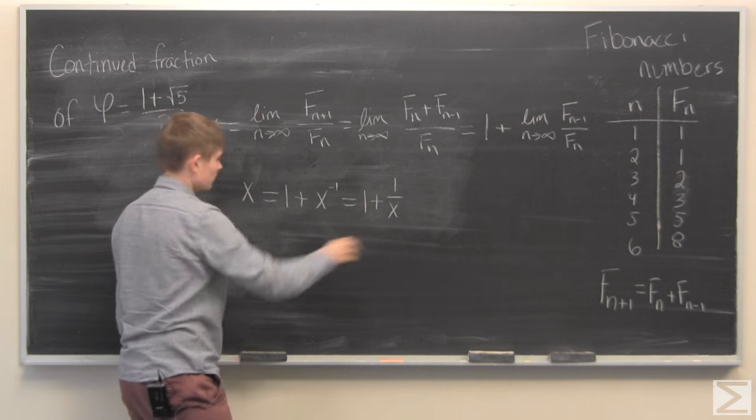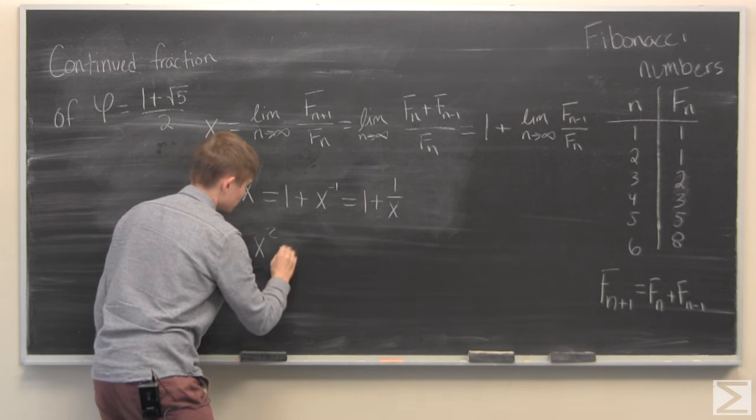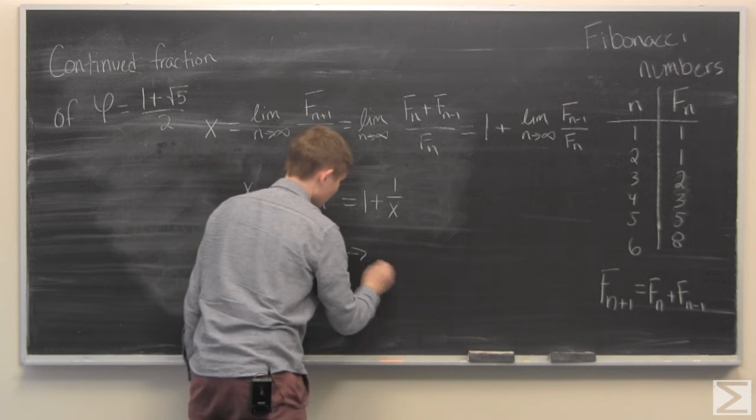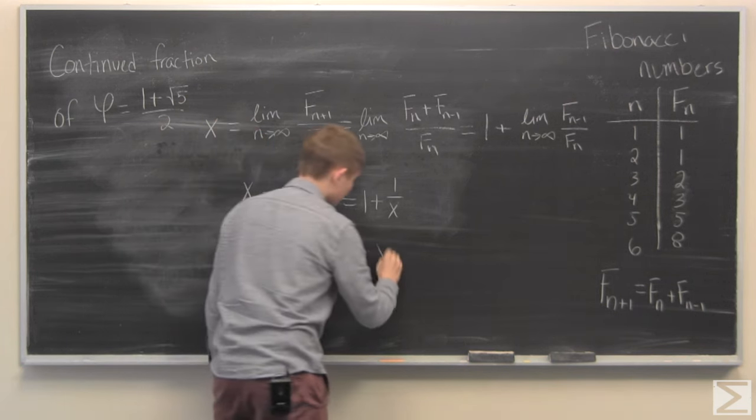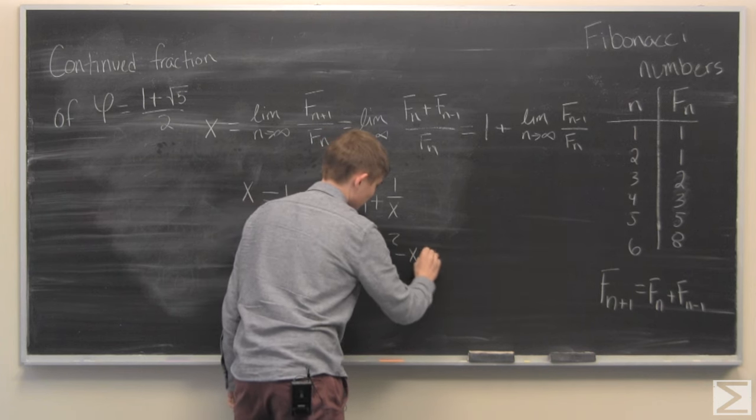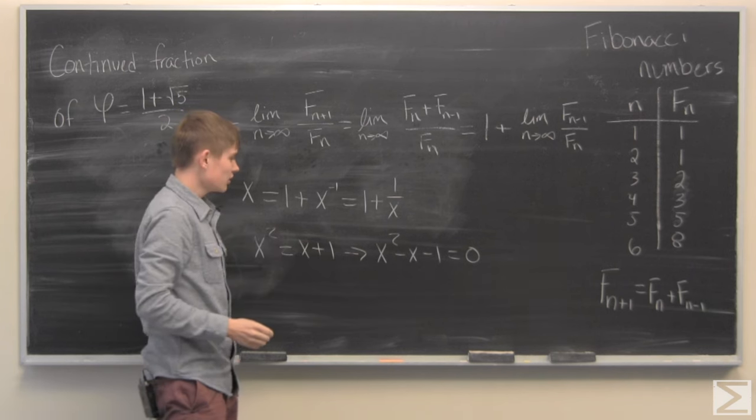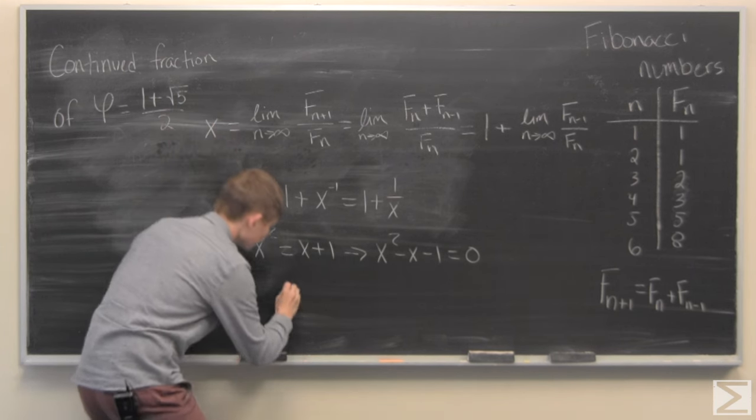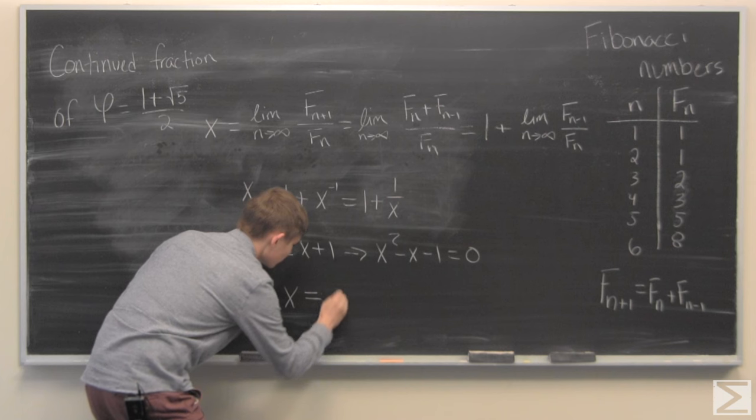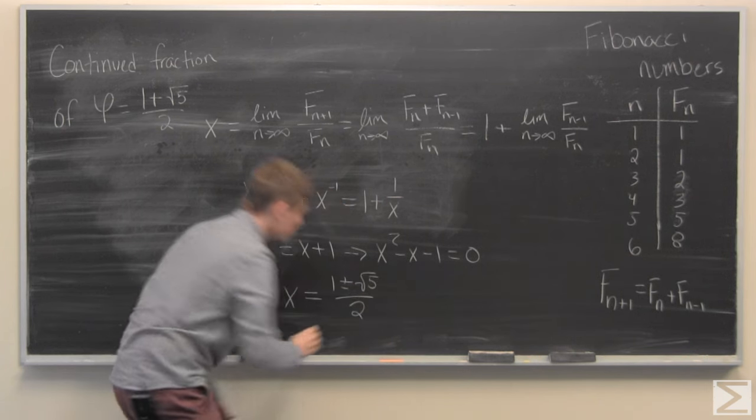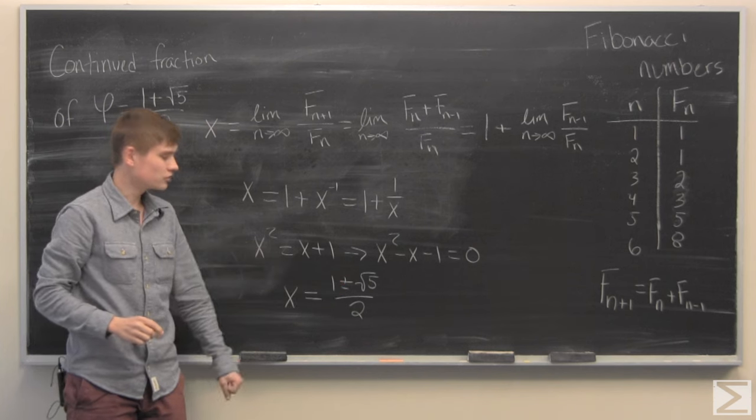We can multiply both sides by x and we get x squared is equal to x plus 1. We can bring the terms to one side. We get a familiar quadratic equation. If you use the quadratic formula, you find that x is equal to 1 plus or minus root 5 over 2.